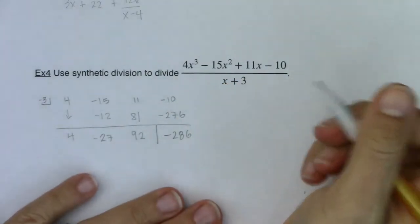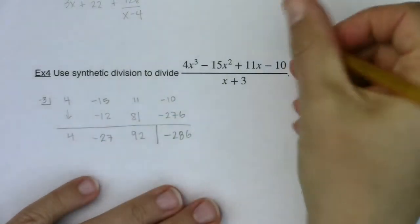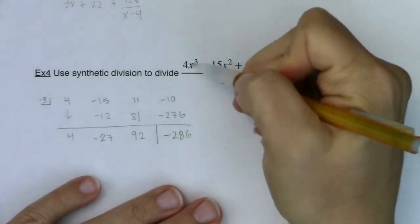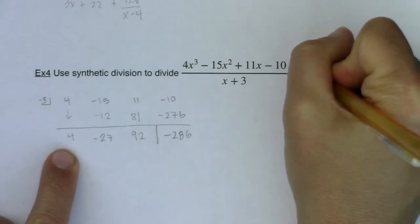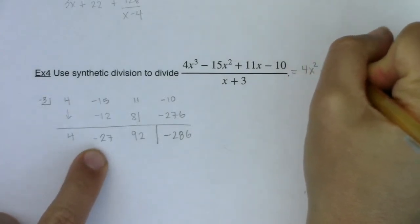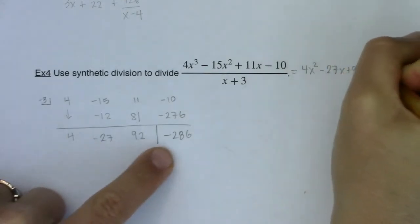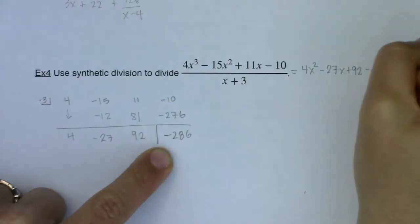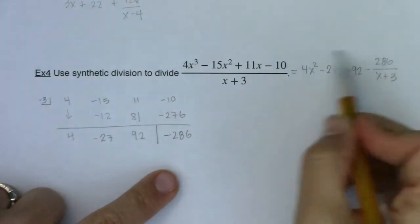Alright, so to go from my work, my output work on synthetic division to my answer. When I divide x cubed by x, I'm going to lower the degree here. So I'm going to start with x squared. The coefficient would be 4. So I have 4x squared minus 27x plus 92 minus, now this is my remainder. So it's got to be 286 in ratio to my divisor of x plus 3. So there is my quotient. That's my solution.